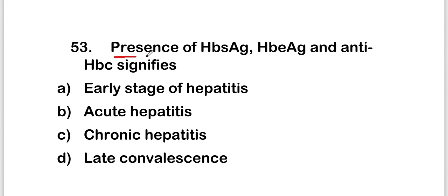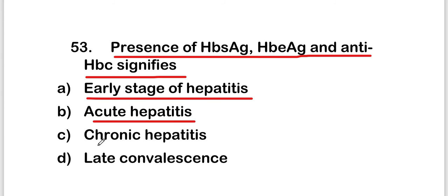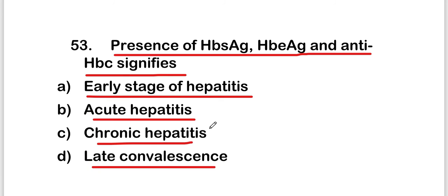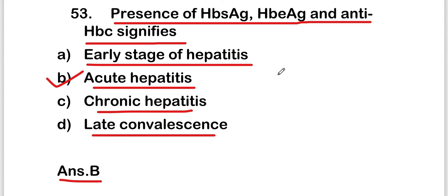The next question is: presence of HBsAg, HBeAg, and anti-HBc signifies early stage of hepatitis, acute hepatitis, chronic hepatitis, or late convalescence? The right answer is option B, that is acute hepatitis. So presence of HBsAg, HBeAg, and anti-HBc signifies acute hepatitis.